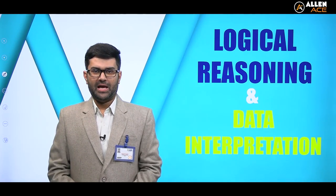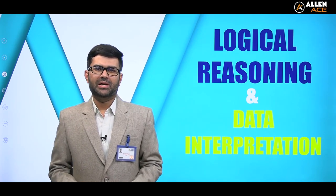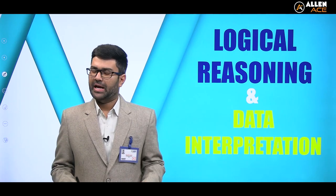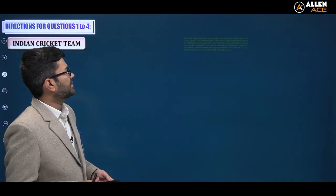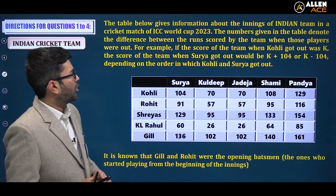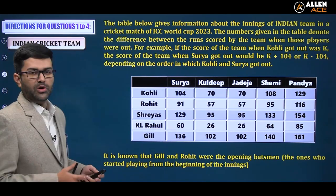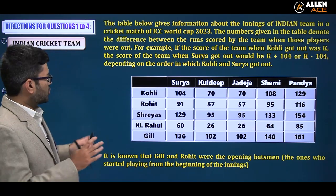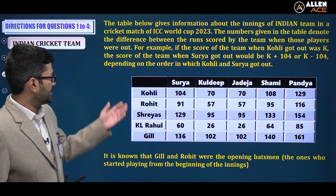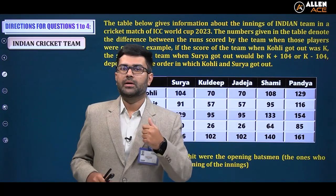Hi everyone, welcome to the YouTube channel of Alan CAT. In this hot series we will be continuing with discussion of brilliant LRDI sets which are very useful for CAT. In today's session I am discussing a set which is really hot recently, although in a negative way because India lost the final. We'll try to solve a set on cricket named 'Indian Cricket Team'. All the players from the World Cup are here: Kohli, Rohit, Shreyas, Rahul, Gill, Surya, Kuldeep, Jadeja, Shami, and Pandya.